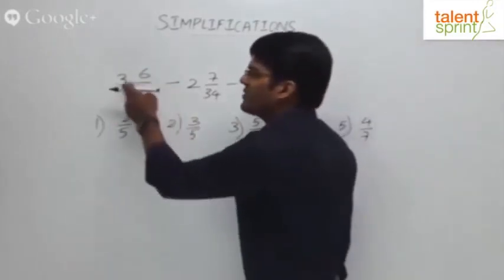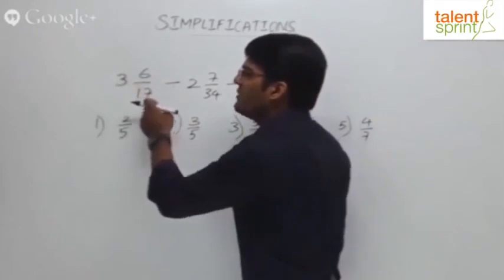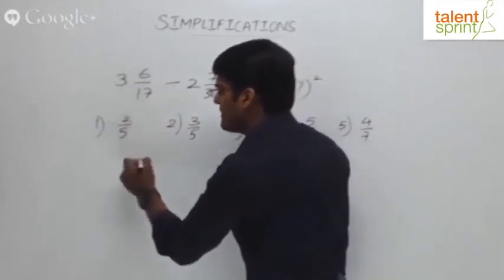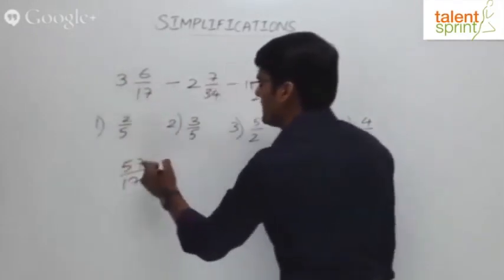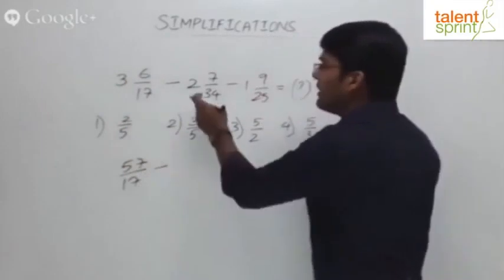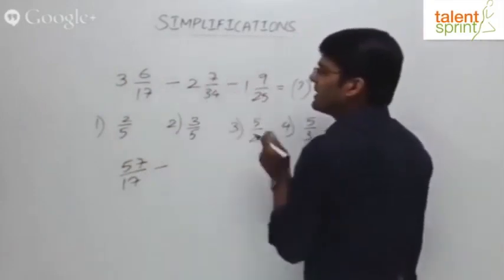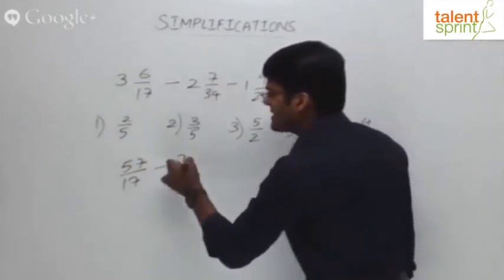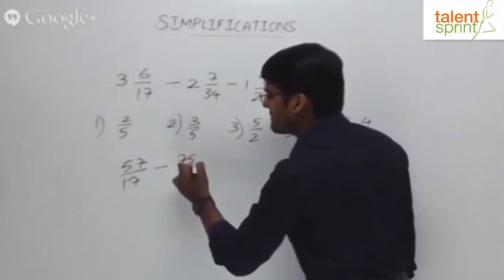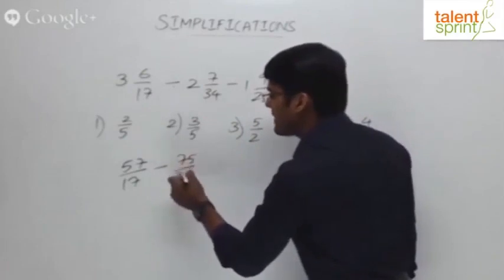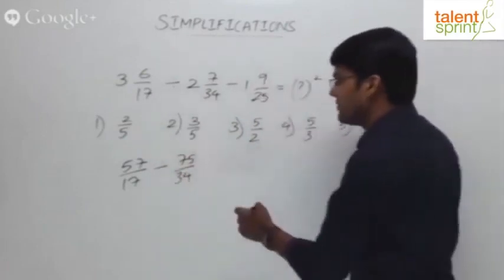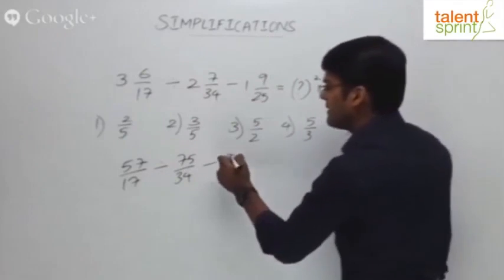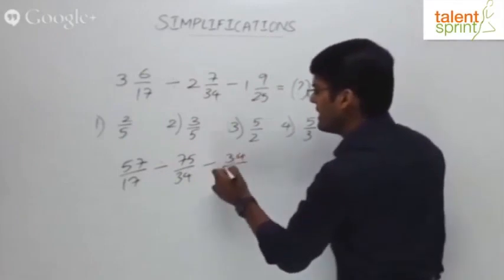So, converting: 3 and 6/17 — 3 times 17 is 51, plus 6 is 57, giving 57/17. Then 2 and 7/34 — 2 times 34 is 68, plus 7 is 75, giving 75/34. And 1 and 9/25 gives 34/25. So we now have: 57/17 divided by 75/34, minus 34/25, equals question mark squared.